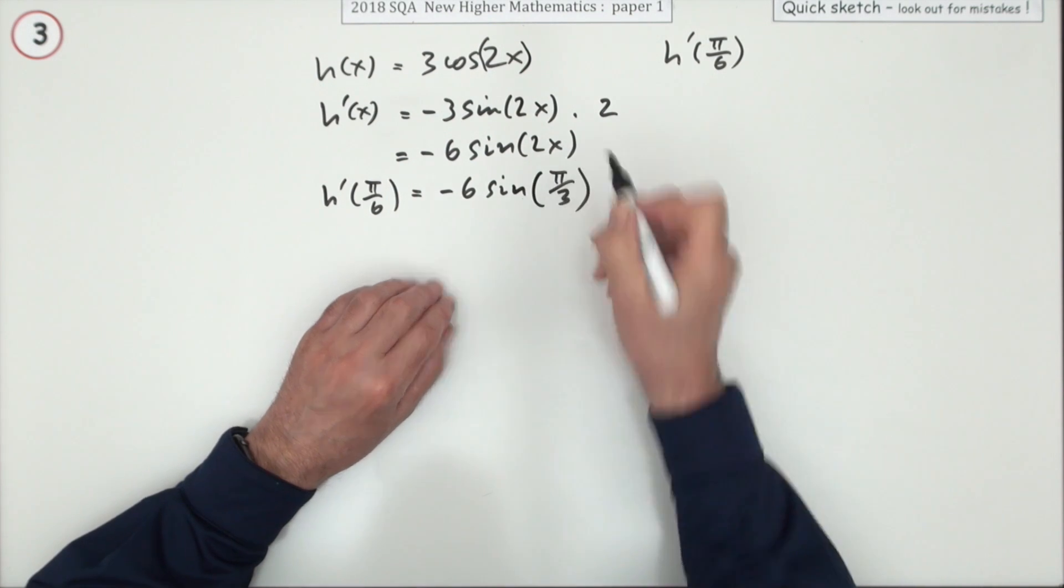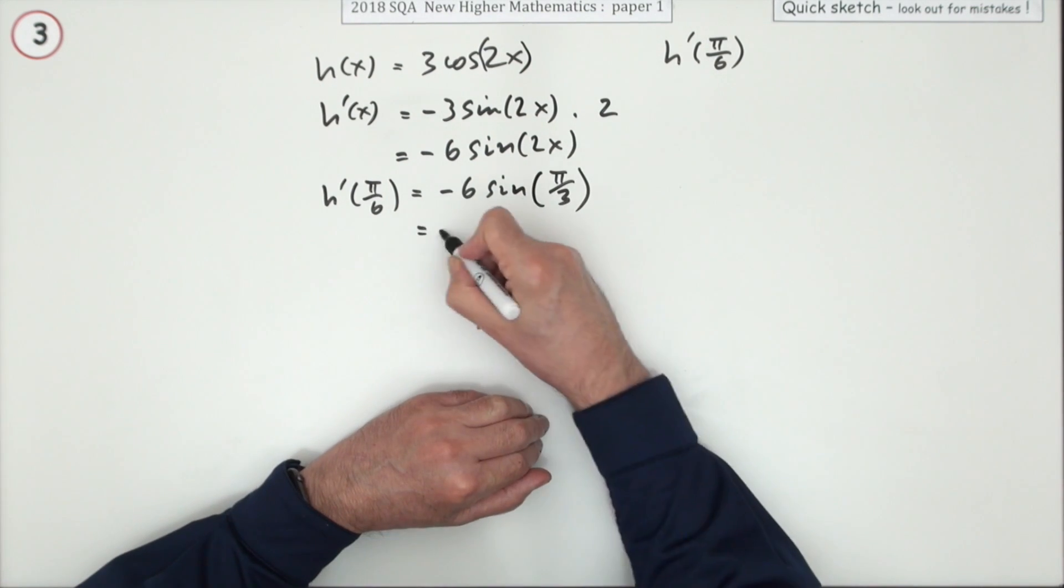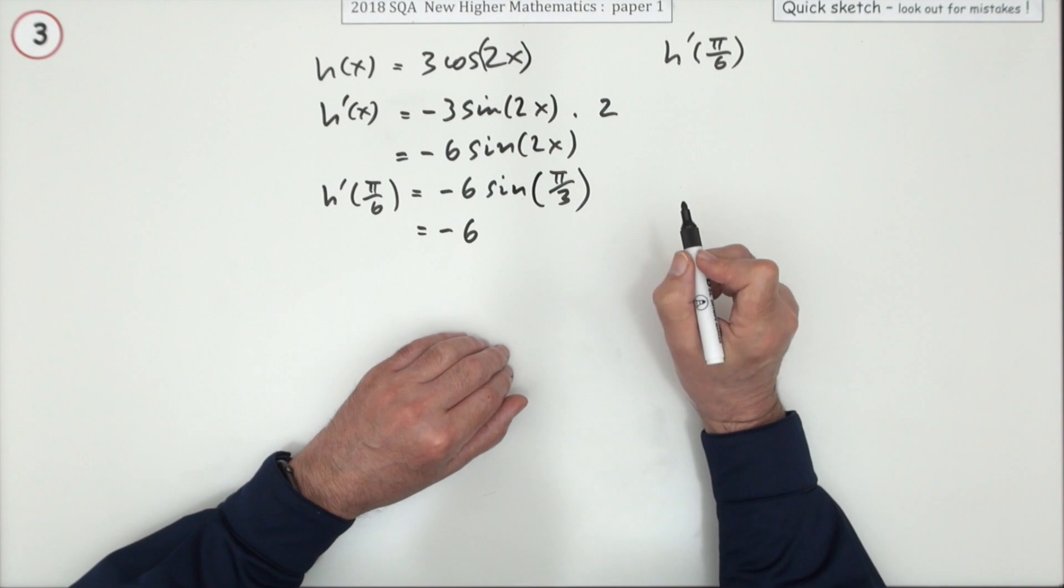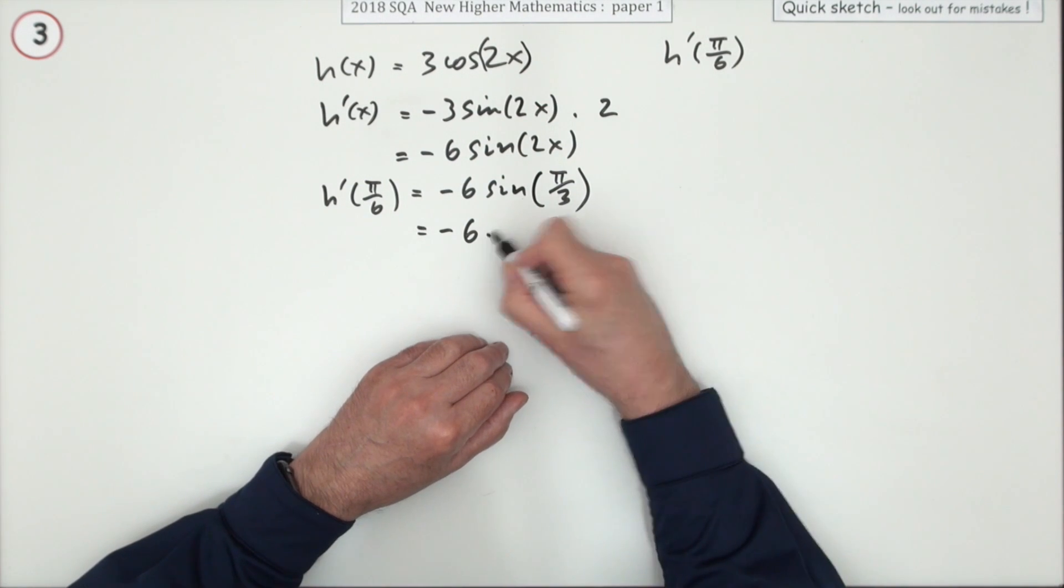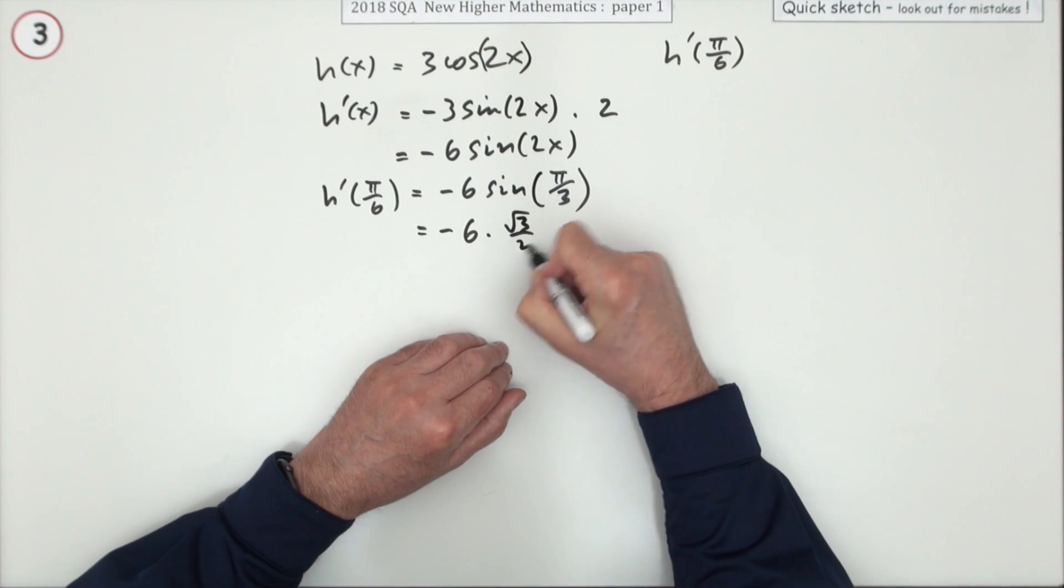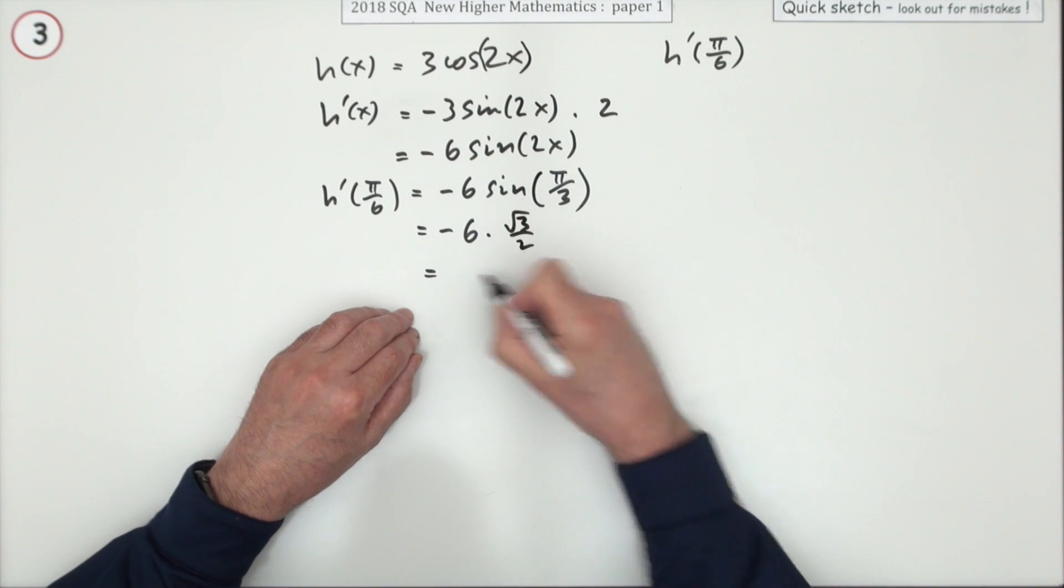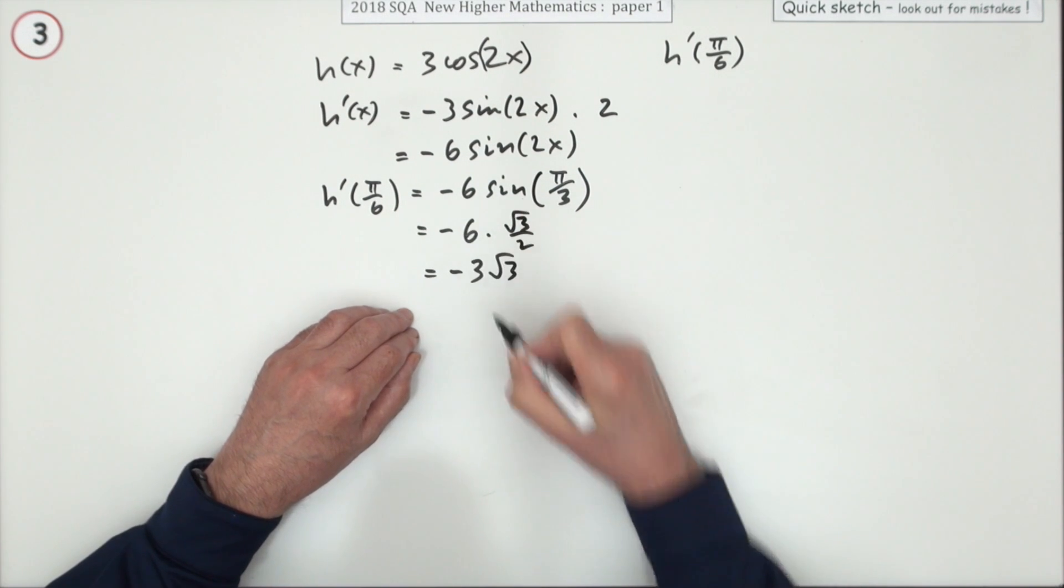And π/3 is one of the ones you know. You can think in degrees if you like, that's 60 degrees, and the sine of 60 is √3/2. Better tidy that up: -3√3.